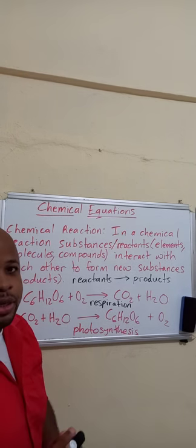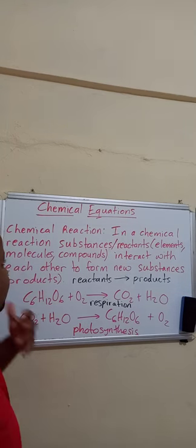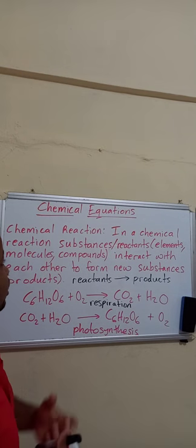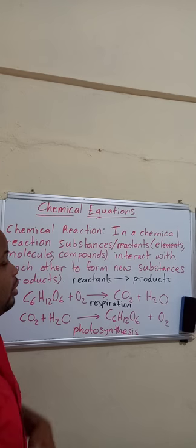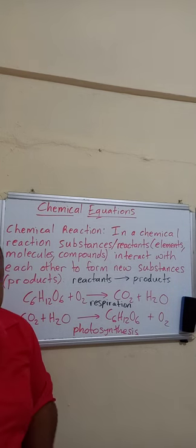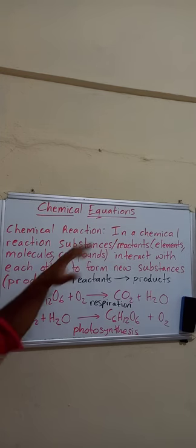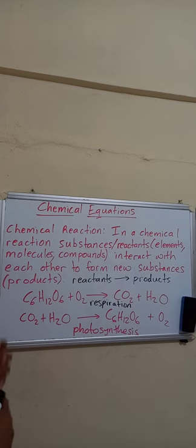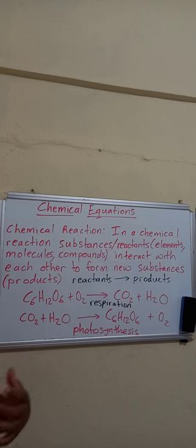Welcome back to the channel. In this video we will be looking at writing chemical equations. We already know how to write formulas, so that will become important in writing a chemical equation. A chemical equation is going to be used to represent a chemical reaction, and a chemical reaction is basically what occurs when you have chemical change.